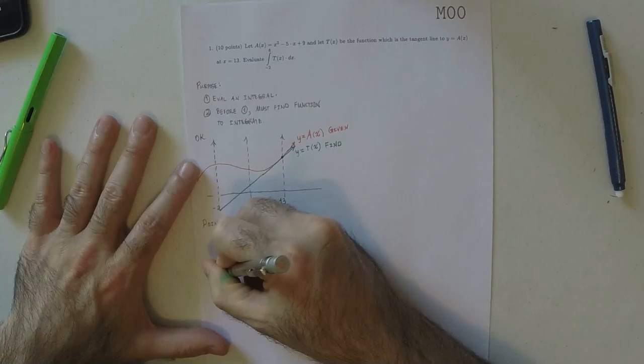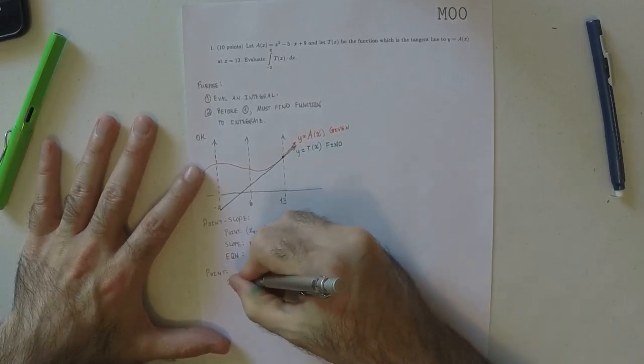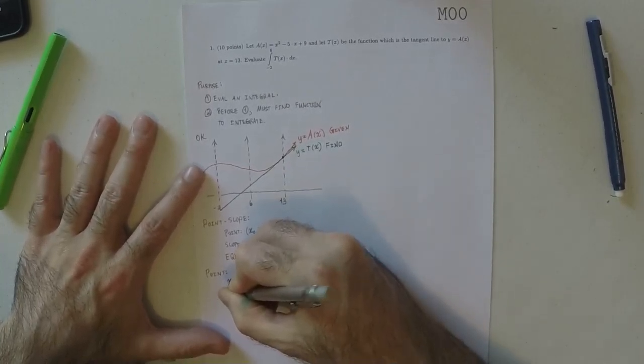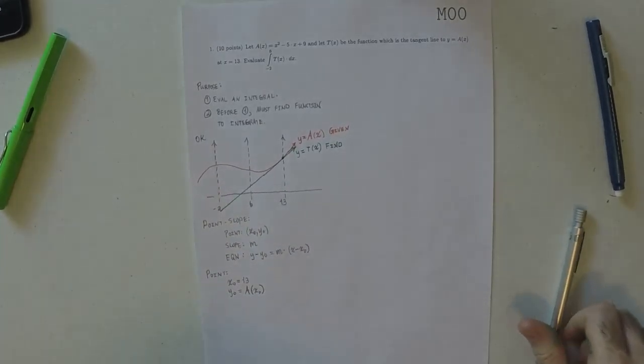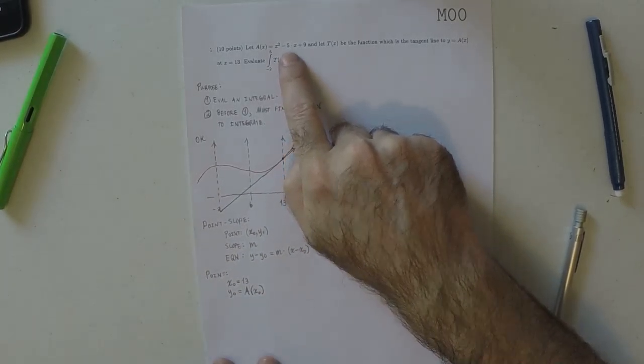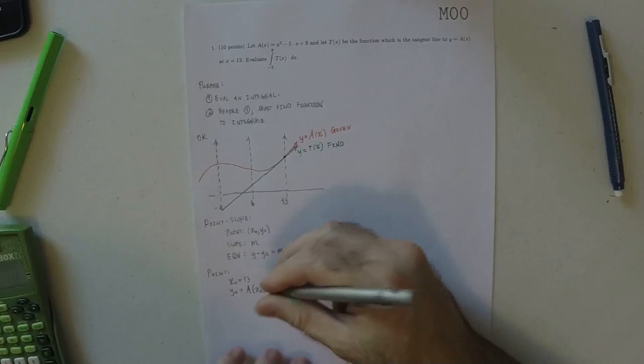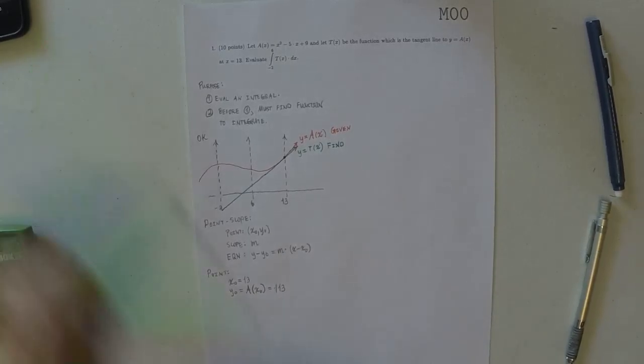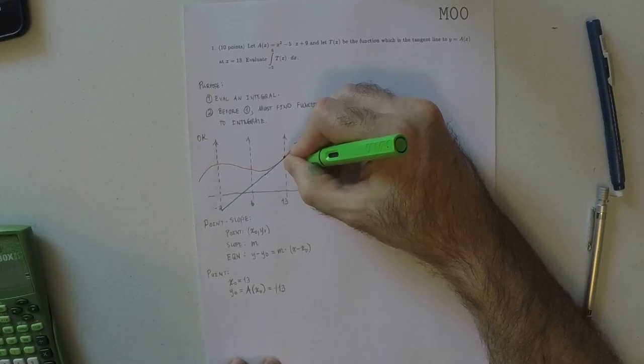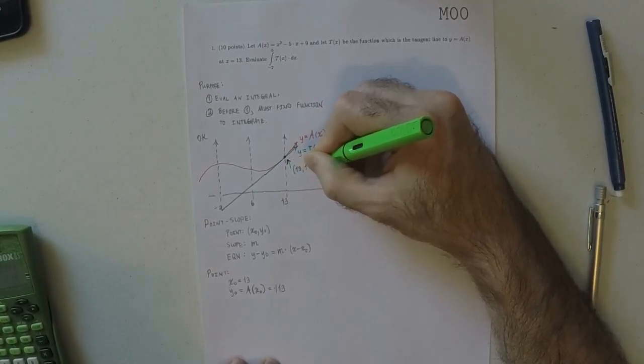So as for the point, we're told that the x-coordinate of the point of tangency is 13. So that means that the y-coordinate is whatever we get when we plug that into A. So plug 13 into A there. I'll do that on the calculator. So 13 squared minus 5 times 13 plus 9. That's 113. So that point there has coordinates 13, 113.